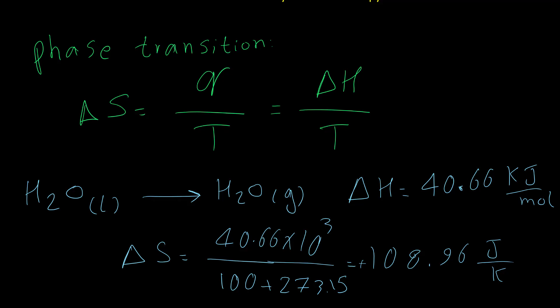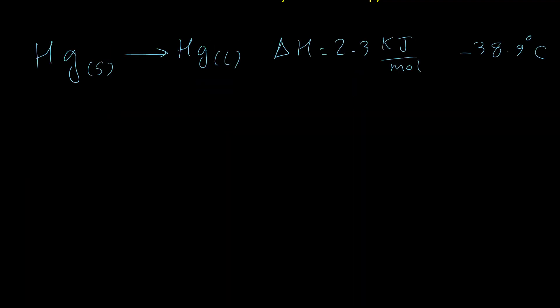plus 273.15. This amount will equal 108.96 joules per kelvin. So in evaporation process, in conversion of liquid to gas, entropy increases. It's very obvious because disorder in gas phase is more than liquid phase. The second example is about mercury. Delta H for this process is 2.3 kilojoules, so 2.3 times 10 to the 3, again temperature should be in kelvin, this equals to